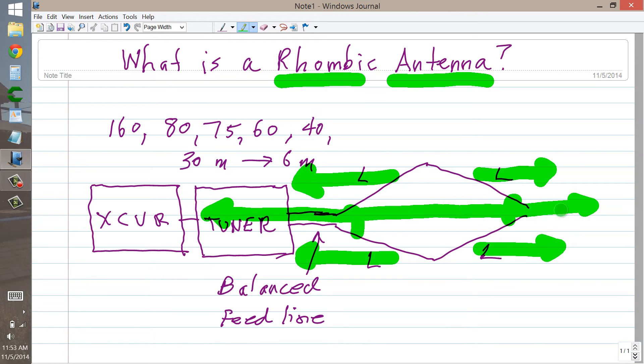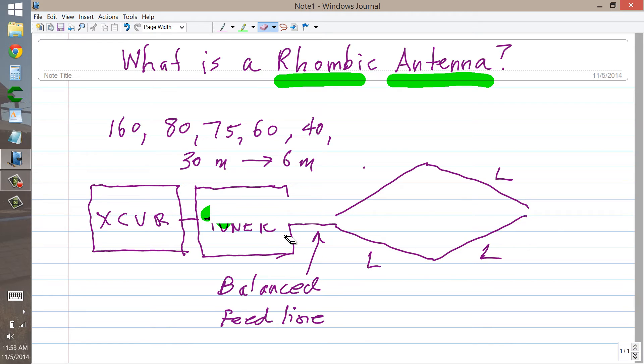Now notice that the far end of this rhombus, the end opposite the feed line, which should normally be an open wire or other balanced type of transmission line, going to your antenna tuner, which you will need for use with such a line. There's your balanced line,